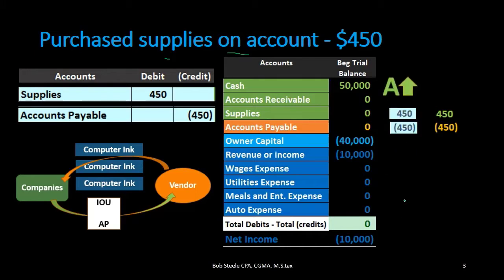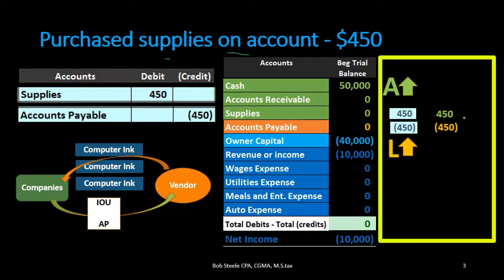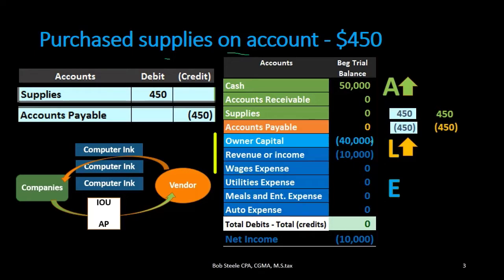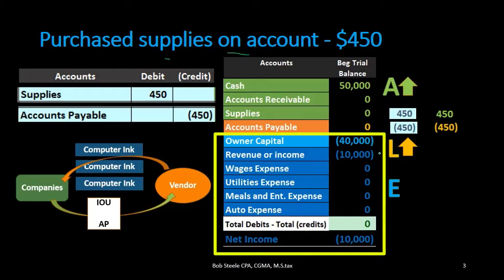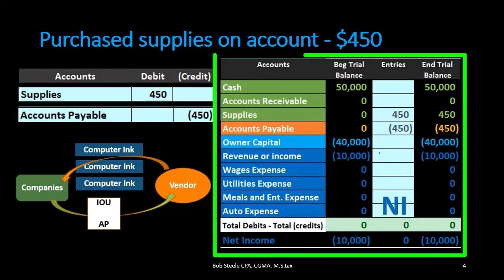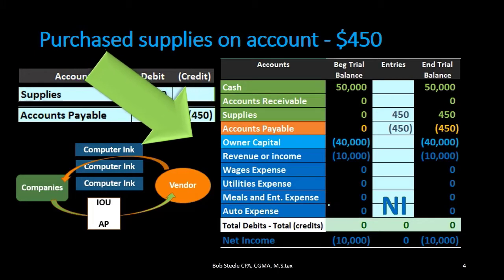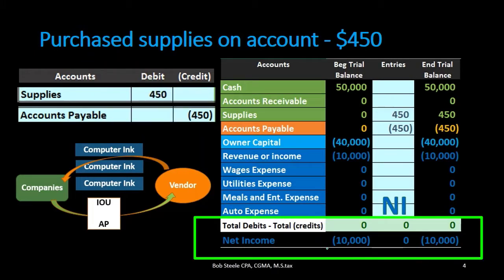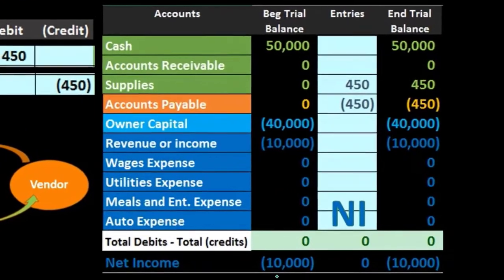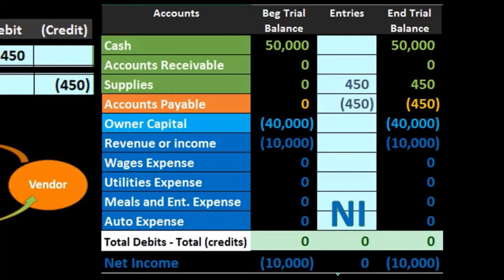The effect on the accounting equation: assets are increasing because supplies are going up; liabilities are also increasing because accounts payable is going up; and equity has no impact — nothing happened in the capital account or the income statement accounts of revenue and expenses. Therefore net income remains the same: revenue of $10,000 minus expenses of zero gives net income of $10,000. This $10,000 is a credit balance — it represents net income, not a loss or negative number.